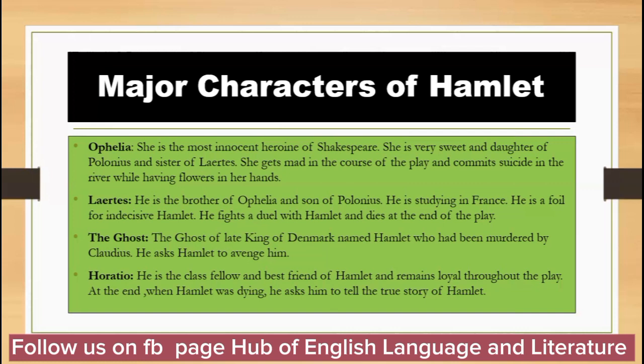The ghost of the late King of Denmark — also named Hamlet — had been murdered by Claudius. He asks Prince Hamlet to avenge him. Horatio is the class fellow and best friend of Hamlet who remains loyal throughout the play. At the end, when Hamlet is dying, he asks Horatio to tell the true story of Hamlet.